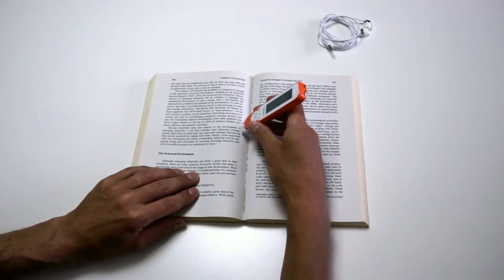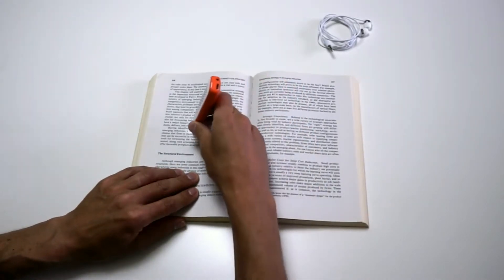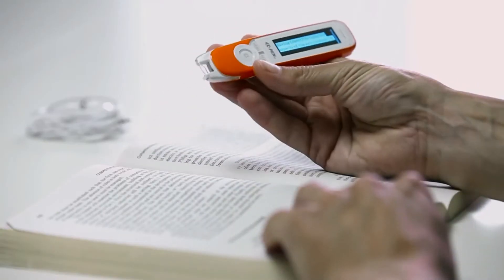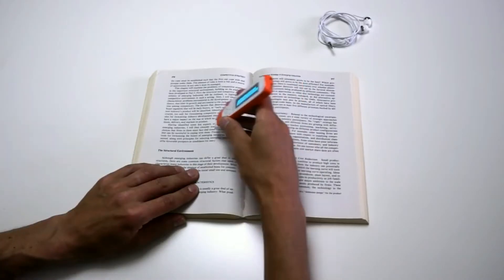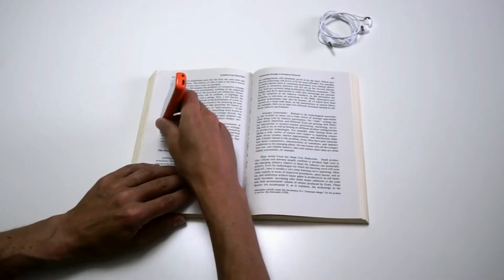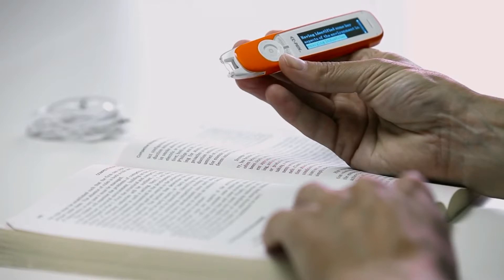When starting the scan, make sure to center the text line in the open gap. Having identified some key aspects of the environment in emerging industries.